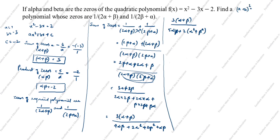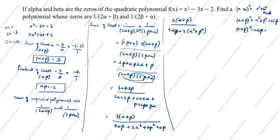We know that (alpha + beta)² = alpha² + beta² + 2 alpha beta. We need alpha² + beta², so we rearrange: alpha² + beta² = (alpha + beta)² minus 2 alpha beta. This is the formula we will use to substitute.